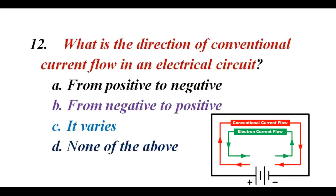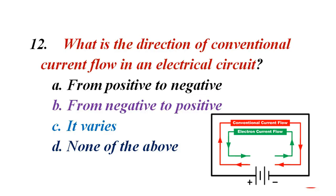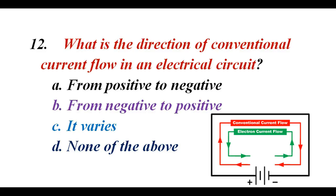What is the direction of conventional current in an electrical circuit? A. From positive to negative. B. From negative to positive. C. It varies. D. None of the above. The correct answer is A. From positive to negative.